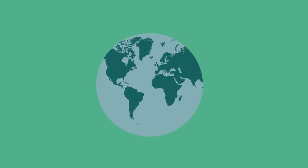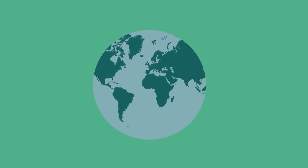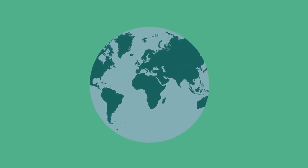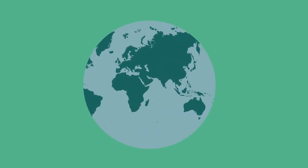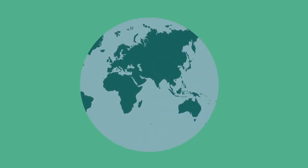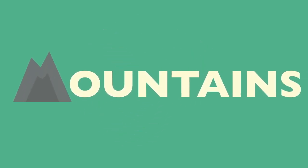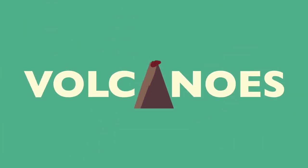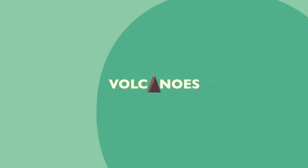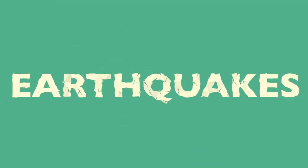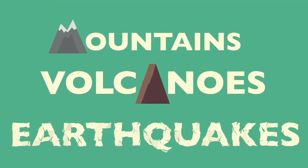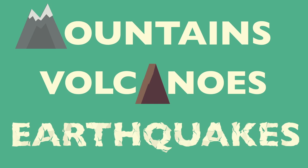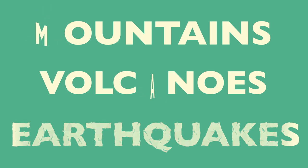Our Earth is dynamic, our landscape constantly changing — sometimes imperceptibly, sometimes dramatically. From the slow growth of mountains measured in millimeters per year to the rapid destruction of volcanoes and earthquakes, our Earth is never still. So let's look at these features in more depth.